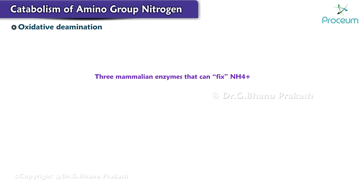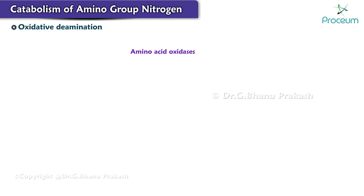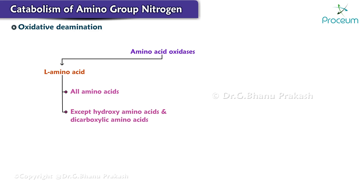Glutamate dehydrogenase is one of three mammalian enzymes that can fix NH4+ into an organic molecule; the other two enzymes are glutamine synthetase and carbamoyl phosphate synthetase 1. Amino acid oxidases provide an alternate pathway for deamination. The L-amino acid oxidase can act on all amino acids except for hydroxy amino acids and dicarboxylic amino acids.